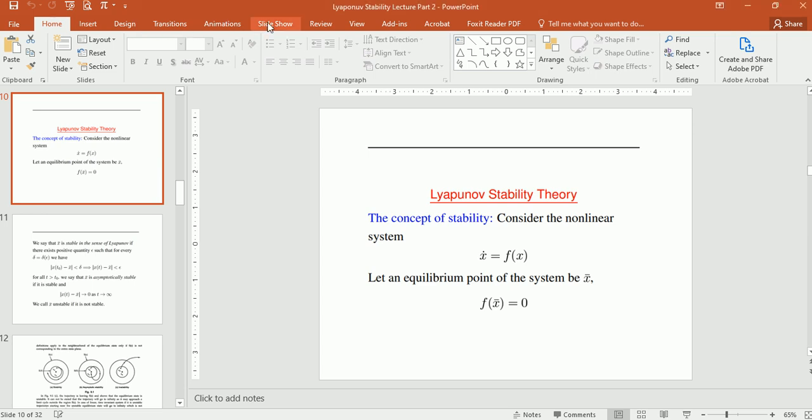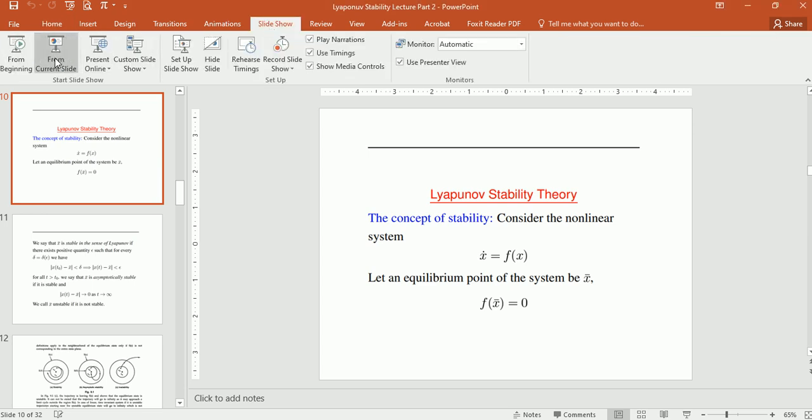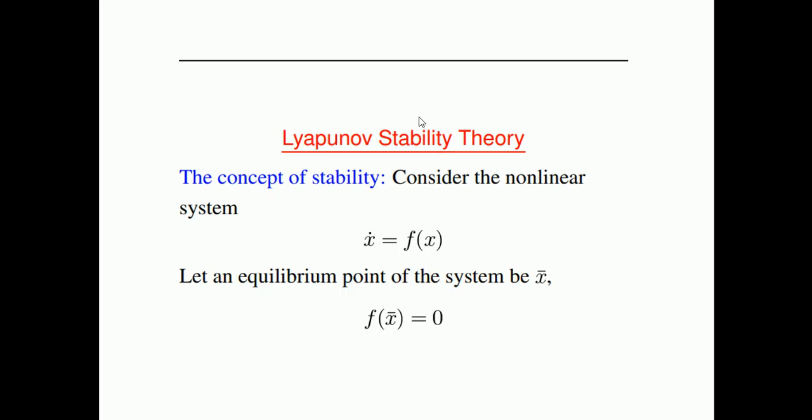In this video we will discuss Lyapunov stability in more detail. There are two types of systems: nonlinear systems and linear systems. For linear systems, the stability analysis is pretty much straightforward — you determine the poles of the closed loop transfer function. If the poles lie on the left half plane the system is stable, and if the poles lie on the right half plane the system is declared as unstable.